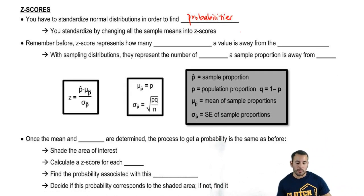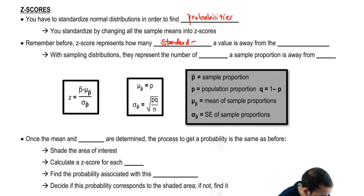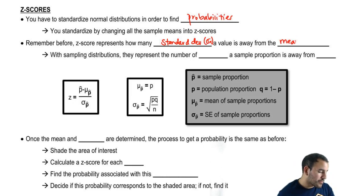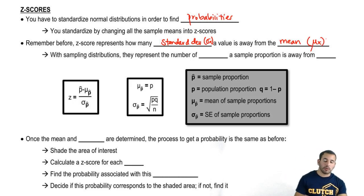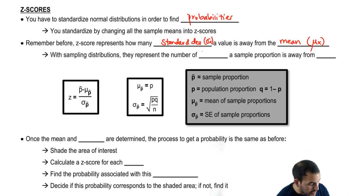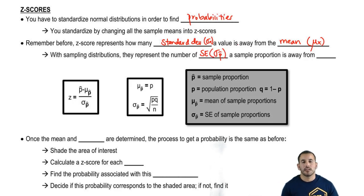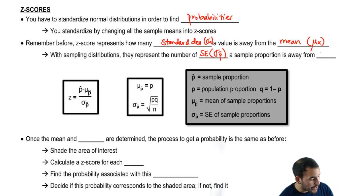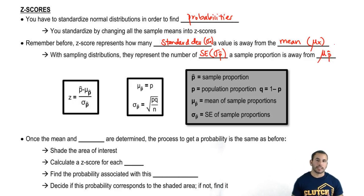Remember, a Z-score represents how many standard deviations away a value is from the mean. Now in this case, with the sampling distribution — and in particular proportions — they represent the number of standard errors. This is sigma P-hat. A sample proportion is away from the mean, mu P-hat. So instead of X-bars, we now have P-hats.